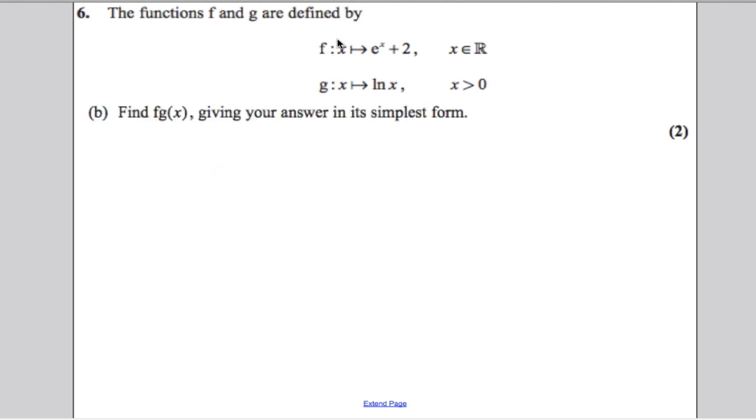Part B, find f of g of x, and it says give your answer in its simplest form. f of g of x. That means you work out f at g of x. You substitute g of x into f. Now, what is g of x? Well, it's ln x. So, this is the same as working out f of ln x. That means wherever you see x here in the function definition, you put ln x. So, this would be e to the ln x and then plus 2. Now, you should know that e and ln are inverse functions. So, e to the ln x is simply x. So, you would have x plus 2. That is it in its simplest form.